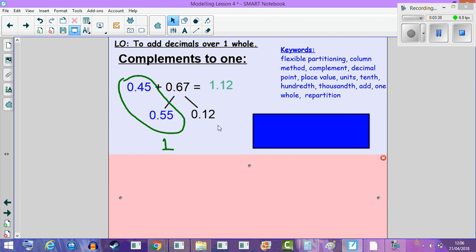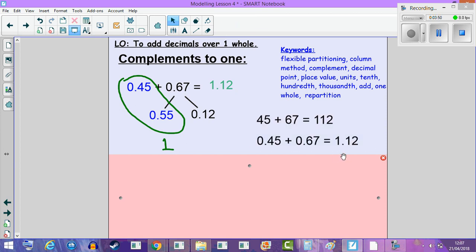Now you must be able to see that by finding complement to one whole helped us find the leftover decimal in order to find 1.12. You could also think about it in this way: I know that 45 add 67 is 112, so in that same way, you can say 0.45 add 0.67 should be 1.12. It's just another way of thinking about how to add without maybe a written method. This is more of a mental method.